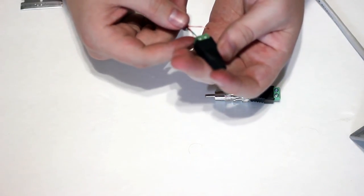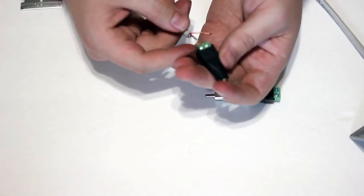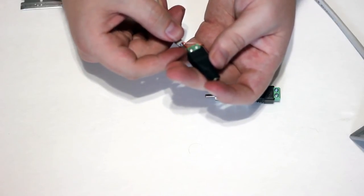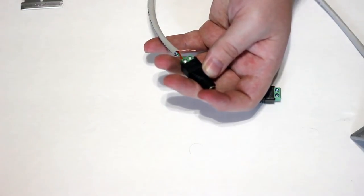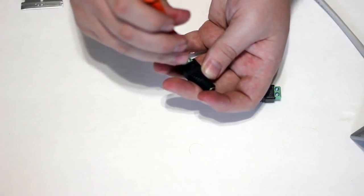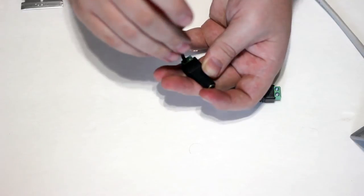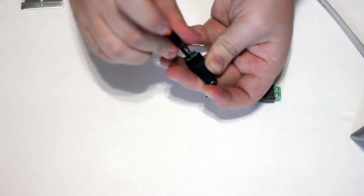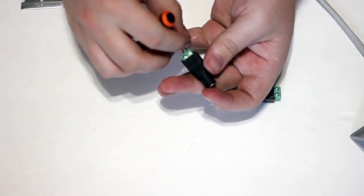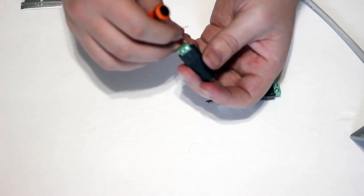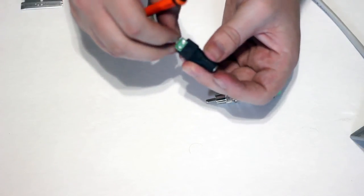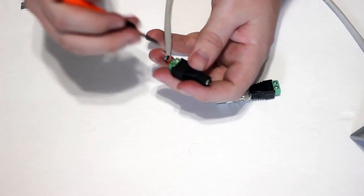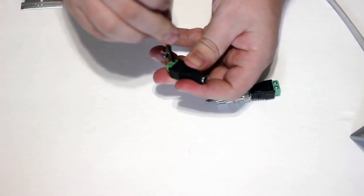We're going to put the what is marked as COM, or common ground, on the board into the negative side of this power to screw terminal little adapter. And then we're going to put the 12 volt into the positive side of the screw terminal adapter.